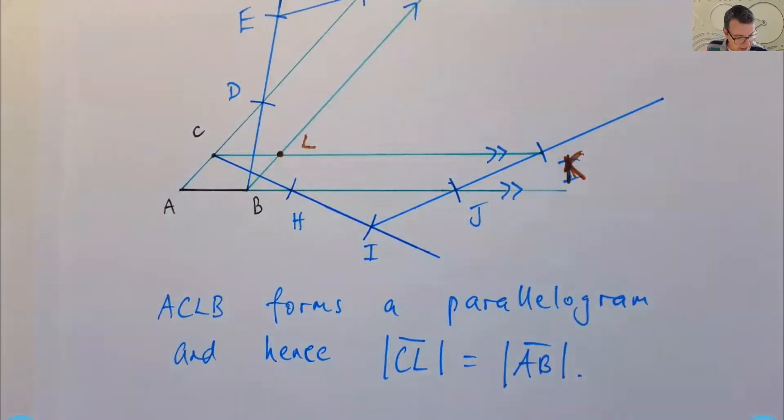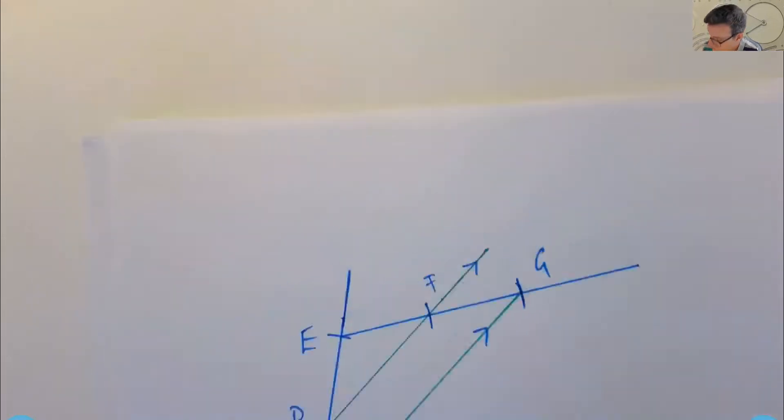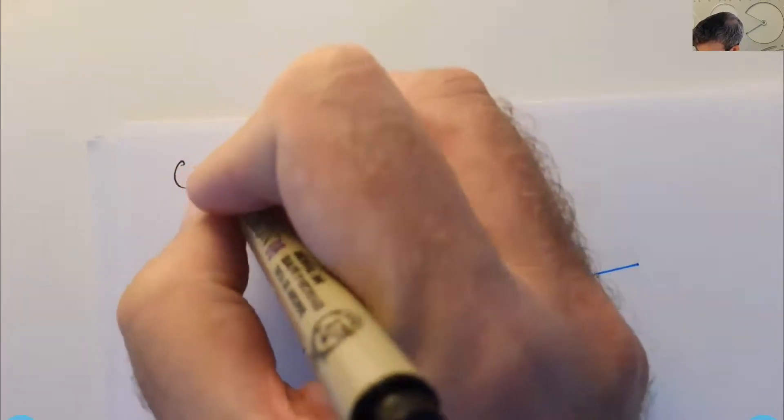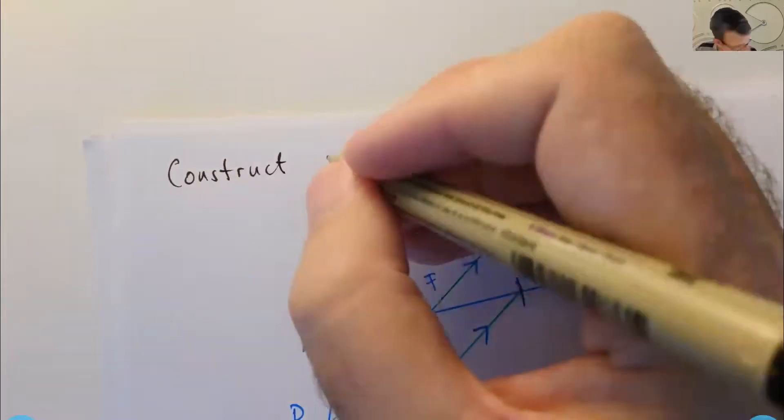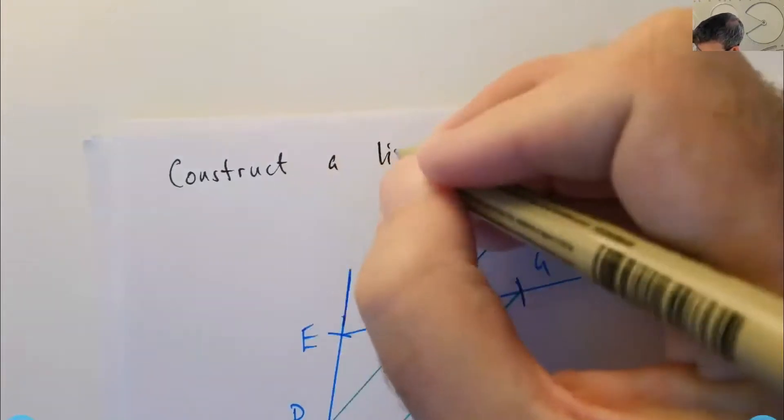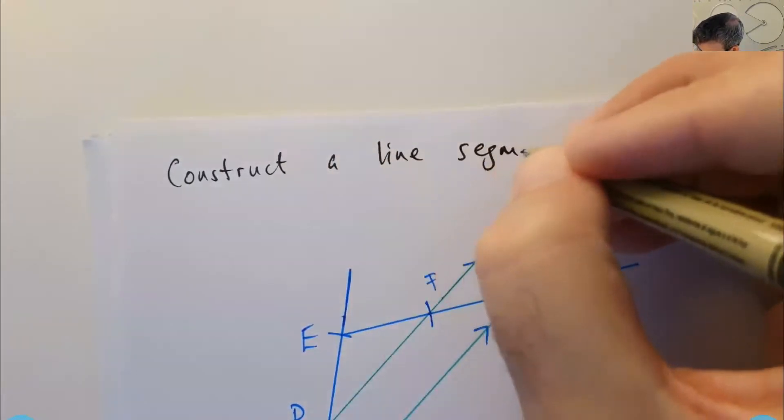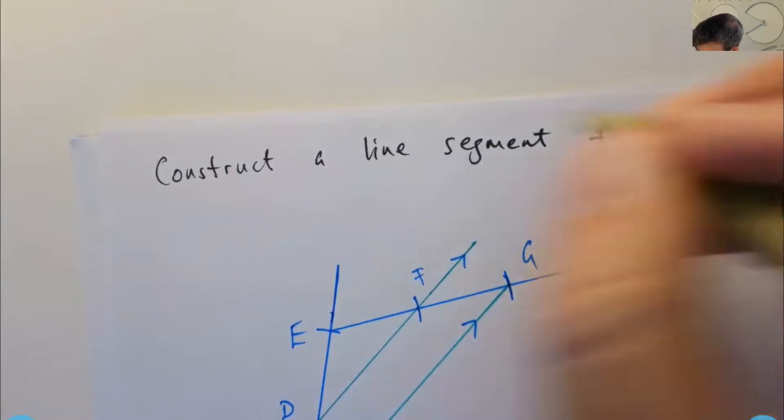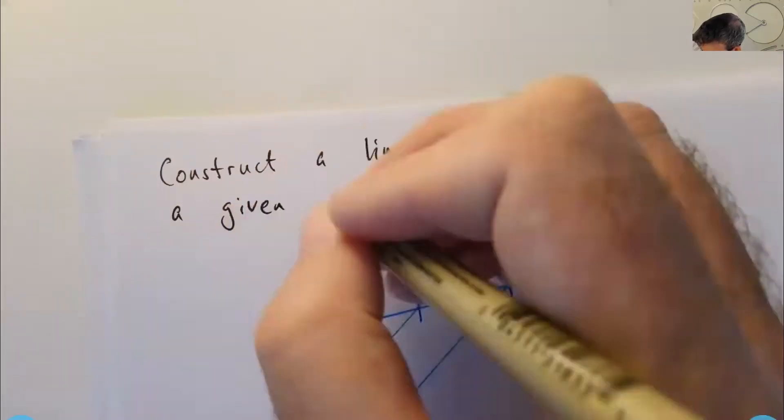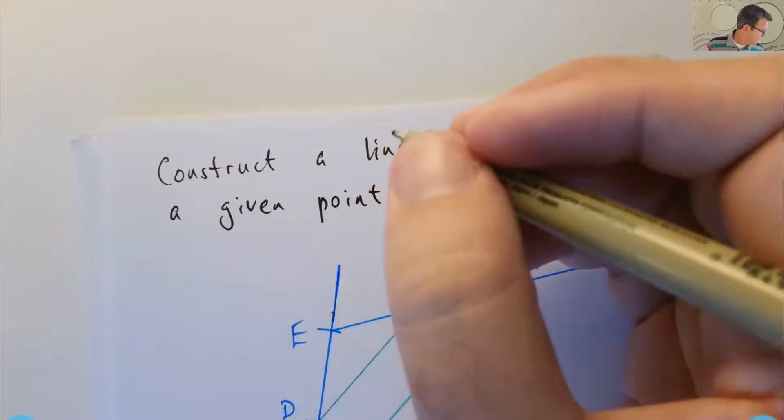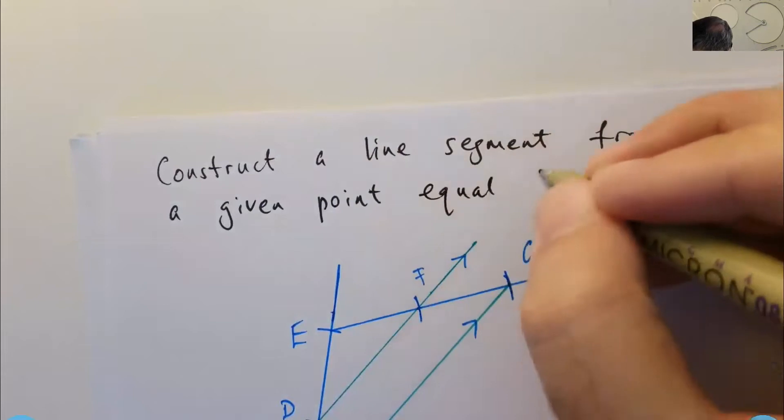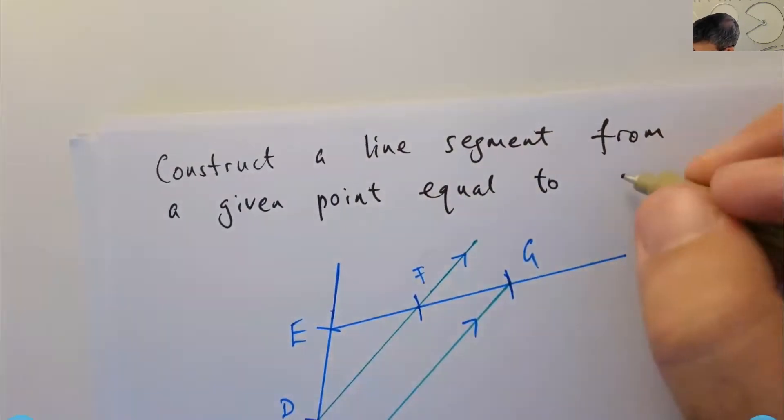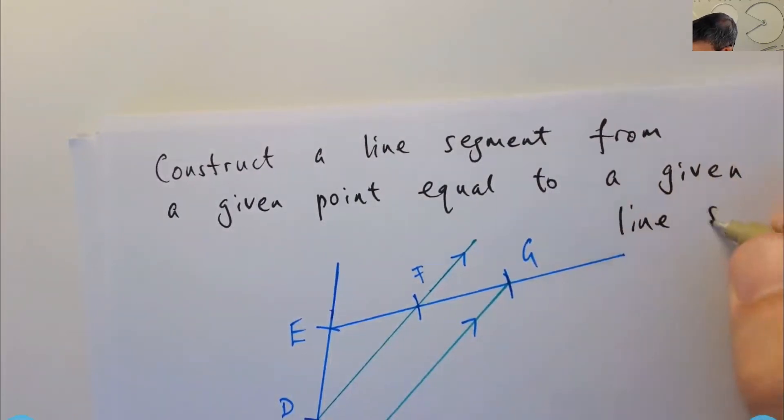All right. So what was the actual challenge there then? Well, the challenge was to construct a line segment from a given point equal to a given line segment. And I mean the length there, right?